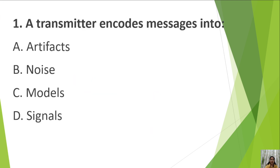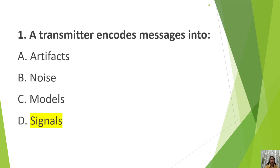First question: a transmitter encodes messages into A. Artifacts, B. Noise, C. Models, D. Signals. It is a very basic and fundamental question. If you have read the models of communication, you must have come across the term transmitter. The function of a transmitter is to encode messages into signals, which are then passed on to the receiver, which translates these signals into the original message.